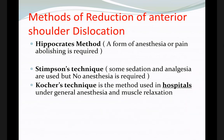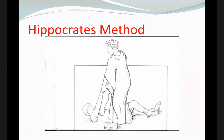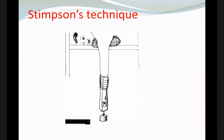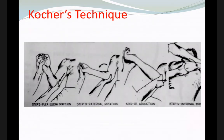There are many methods for reduction. It is better to give the patient some sedation. Common techniques include the Hippocrates method, the Stimson technique, and the Kocher technique. With the Hippocrates method, traction while the patient is lying down usually brings the shoulder back. The Stimson technique involves placing the patient prone with a weight applied, waiting for the shoulder to reduce. The Kocher technique uses traction with external rotation followed by forceful adduction.